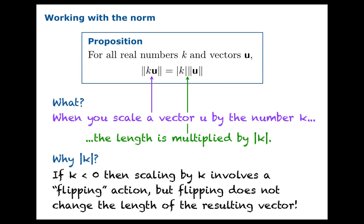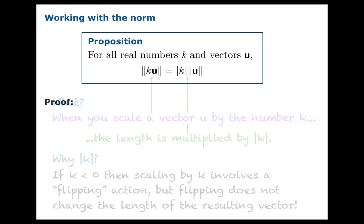Why absolute value of k? Well, one way to think of it is, if k is negative, then scaling by k involves some sort of flipping. But the flipping doesn't change the length. So the absolute value squashes that sign information. You don't have to worry about it.